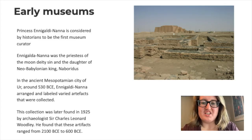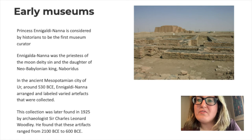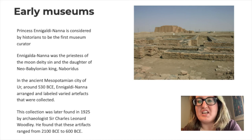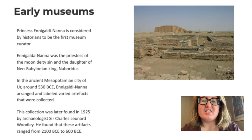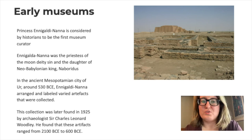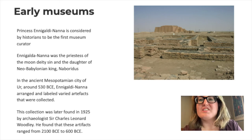Next, I'm going to talk about Princess Ennigaldi-Nanna, who is considered by historians to be the first museum curator. Ennigaldi-Nanna was the priestess of the moon deity Sin and the daughter of Neo-Babylonian king Nabonidus. She is from Ur and lived around 530 BCE, and she was recorded to have arranged and labeled artifacts that were collected. This collection was later found in 1925 by archaeologist Sir Charles Leonard Woolley. He found that these artifacts ranged from 2100 BCE to 600 BCE. She went one step further and labeled these objects, and notably arranged artifacts from different geological areas and historical settings neatly assembled together.